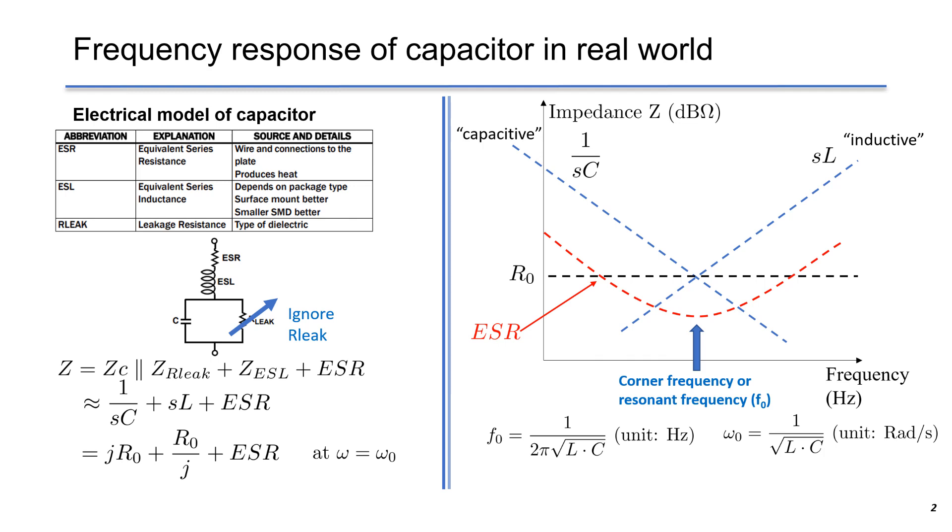Usually, ESR is smaller than R0. At F0, the impedance of ESL and C have same magnitude but opposite phase. They have 180 degree phase difference. Therefore, they cancel out each other and only ESR are left in the impedance.